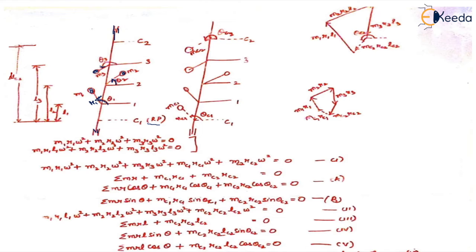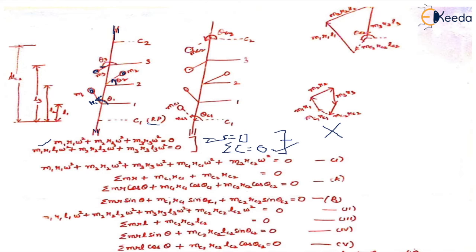If the system were dynamically balanced, the resultant of forces — m1·r1·ω² + m2·r2·ω² + m3·r3·ω² — would be zero, meaning summation of forces equals zero. And the summation of couples would be zero: m1·r1·l1·ω² + m2·r2·l2·ω² + m3·r3·l3·ω² = 0. But these two conditions are not satisfied — especially the resultant of couple is not zero, because these masses lie in different planes.